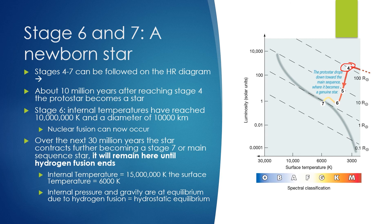Stages four to seven can be followed on the HR diagram. About 10 million years after reaching stage four, the protostar finally becomes a star. At stage six, the internal temperatures have reached 10 million K, and the star now has a diameter of 10,000 kilometers — we have reached the temperature, size, and pressure balance where nuclear fusion can begin. Over the next 30 million years, the star contracts further, becoming a stage seven or main sequence star, and it will remain here until hydrogen fusion ends. The internal temperature at this point is 15 million K, with a surface temperature of 6,000 Kelvin, and internal pressure and gravity are at equilibrium due to hydrogen fusion, which causes hydrostatic equilibrium.